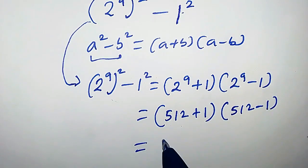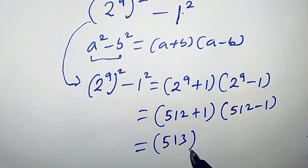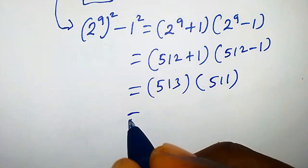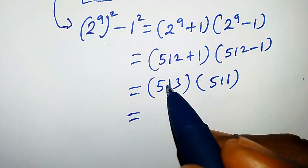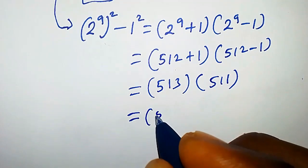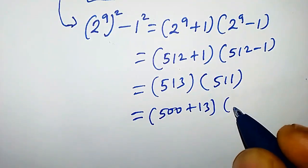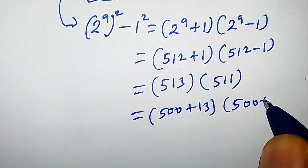This equals 512 plus 1, that is simply 513, times 512 minus 1, that is 511. So this equals now 513, which is the same thing as writing 500 plus 13, likewise 511 is the same thing as writing 500 plus 11.